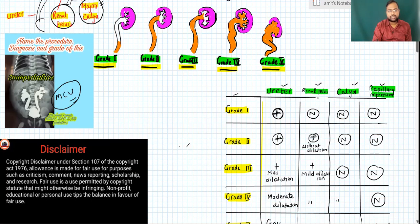In Grade 2, the reflux reaches up to the renal pelvis, but there is no dilatation. The calyxes and papillary impression remain normal.